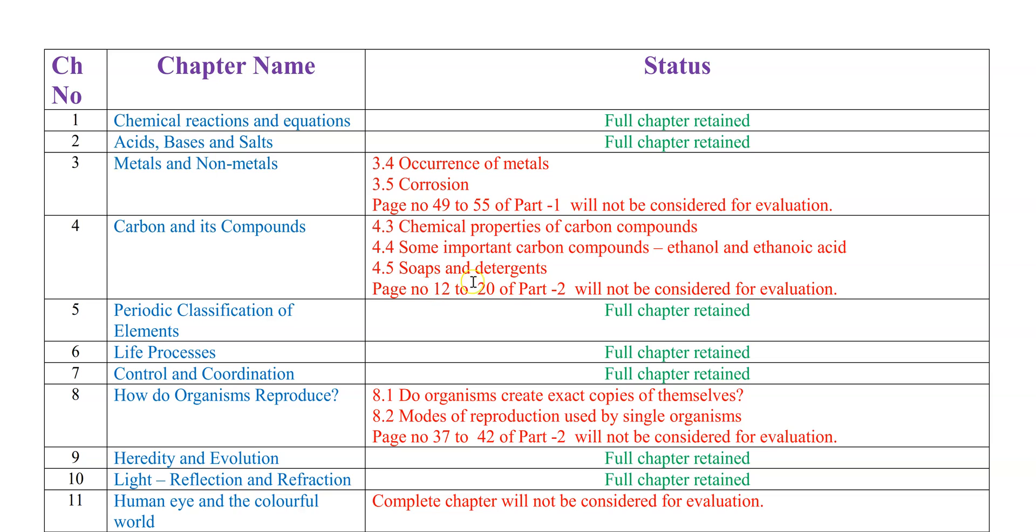From 12 to 20, that is topic number 4.3 Chemical Properties of Carbon Compounds, 4.4 Some Important Carbon Compounds, that is Ethanol and Ethanoic Acid, and 4.5 Soaps and Detergents. These entire topics are deleted. You will not get any questions from these topics.